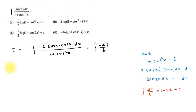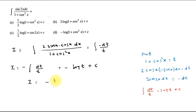So the integral becomes -dt/t, which is the standard form. The integral of dt/t is log t + C. So this integration becomes -log(t) + C. Putting back the value of t, we get I equal to -log(1 + cos²x) + C. Looking at the options, option D, which is -log(1 + cos²x) + C, is the correct one.